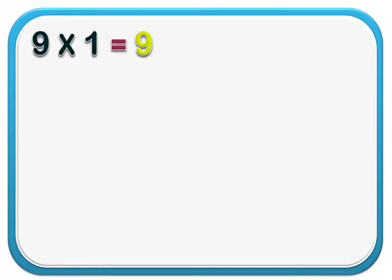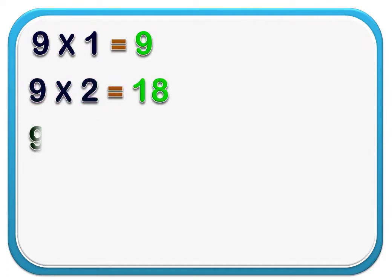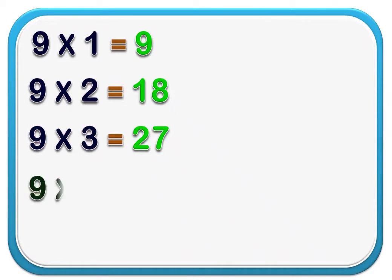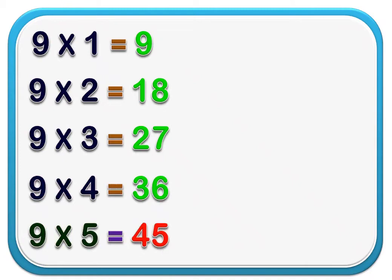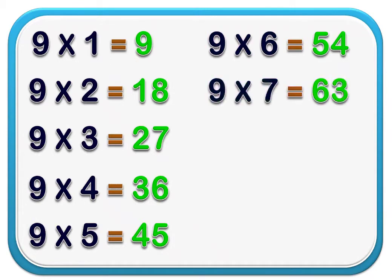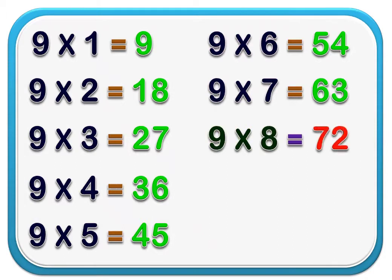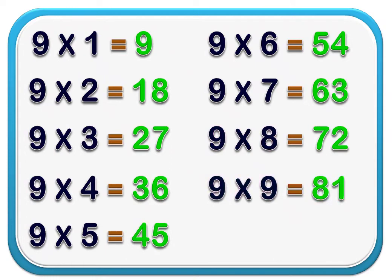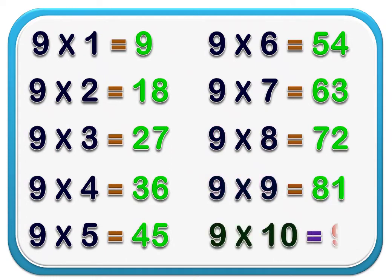9 1 is 9. 9 2 is 18. 9 3 is 27. 9 4 is 36. 9 5 is 45. 9 6 is 54. 9 7 is 63. 9 8 is 72. 9 9 is 81. 9 10 is 90.